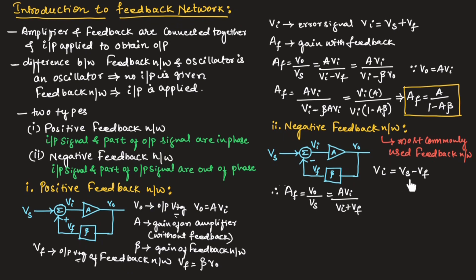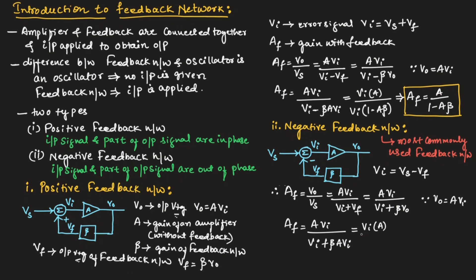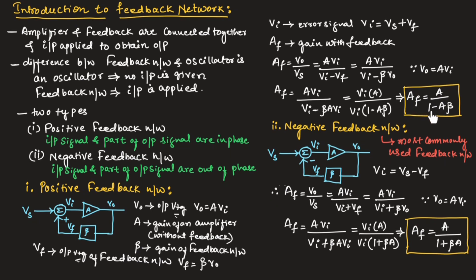We can write AF equal to V0 divided by VS, which gives AVI divided by VI plus beta V0. Since VF equals beta V0 and V0 equals AVI, AF equals AVI divided by VI plus beta AVI. Taking VI common, the overall gain for a negative feedback network is AF equals A divided by 1 plus beta A. To summarize: for a positive feedback network, AF equals A divided by 1 minus A beta, and for a negative feedback network, AF equals A divided by 1 plus A beta.